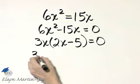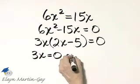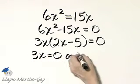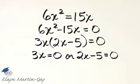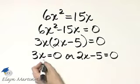we set each factor equal to 0. So that's 3x equals 0 or 2x minus 5 is equal to 0. And let's solve each equation.